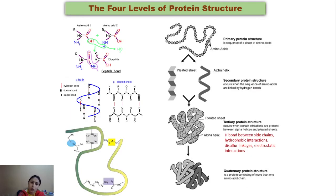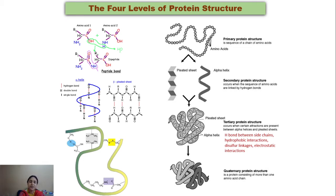Protein structure can be of four types. Proteins are formed by condensation of amino acids — by release of water, amino acids are joined through peptide linkage to form a protein molecule. That structure may be of primary, secondary, tertiary, or quaternary type, and the linkage between them creates different types of protein structures.